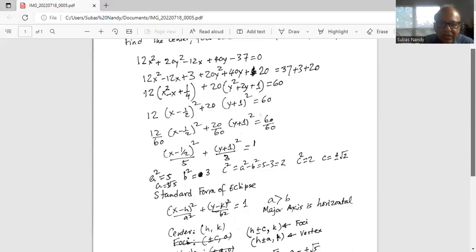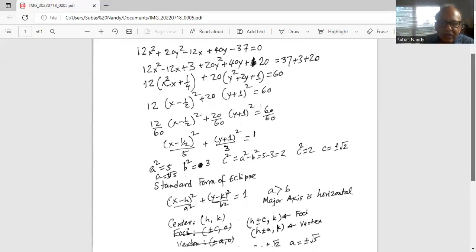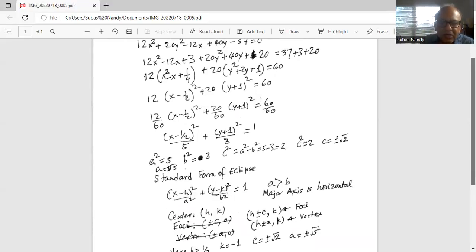Okay, a is greater than b. So major axis is horizontal. So my foci is h plus minus c, k. My vertex is h plus minus a comma k.